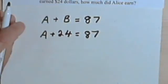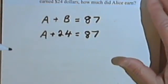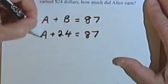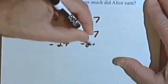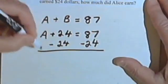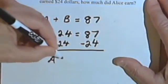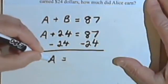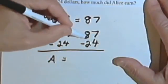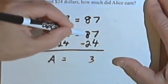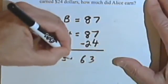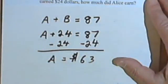Now the problem is set up, so the worst part is over. Let's just isolate the A. I'll subtract 24 from both sides. On the left side I get A, that's the amount that Alice earned. And on the right side I get, let's see, 7 minus 4 is 3, 8 minus 2 is 6. So Alice earned $63.